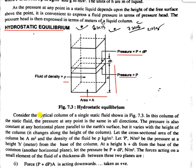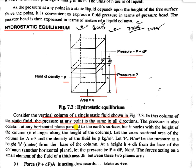Consider a common vertical column for a single static fluid as shown in the figure. In this column of static fluid, the pressure at any point is the same in all directions. The pressure is also constant at any horizontal plane parallel to the earth's surface.